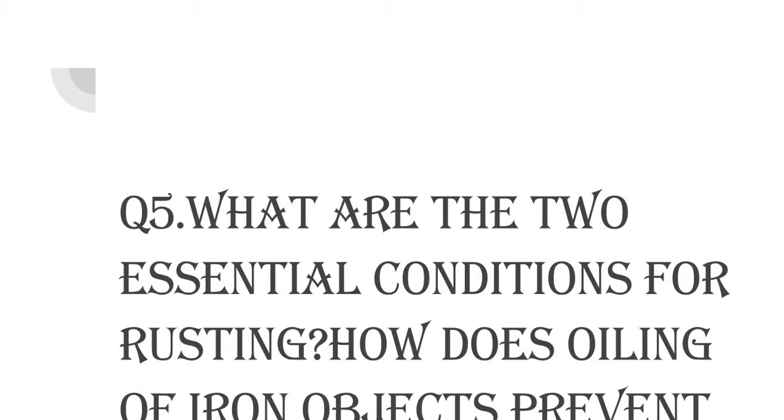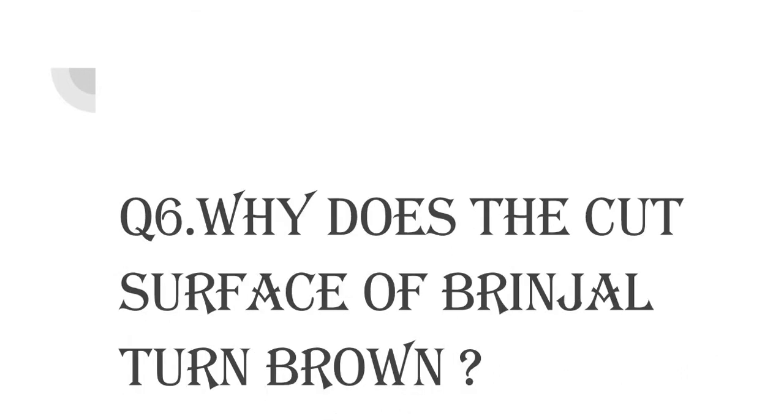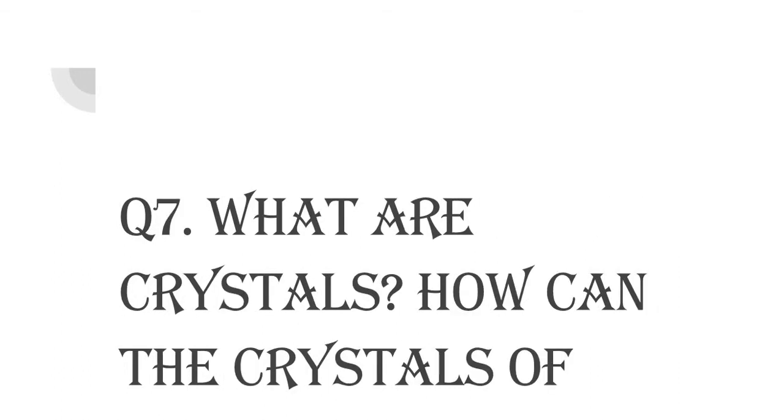Oiling iron objects protect their surface from coming in contact with moisture and prevents rusting. Question number 6: How does the cut surface of brinjal turn brown? The cut surface of brinjal turn brown due to a chemical reaction between certain compound present in brinjal and atmospheric oxygen.